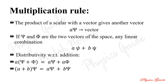The second rule is the multiplication rule in a linear vector space. The product of a scalar with a vector gives another vector. The set of scalars is defined by small letters a, b, c, and the set of vectors by psi, phi, and chi.